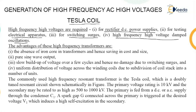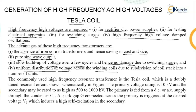There are certain advantages to this. There is absence of an iron core, and hence that saves the cost as well as the size. Since the iron core is absent, the losses are also controlled. Then there is a pure sine wave output. There is a slow buildup of voltage over a few cycles, and hence no damage due to switching surge. The last advantage is uniform distribution of voltage across the winding coils due to subdivision of the coil stack into a number of units.